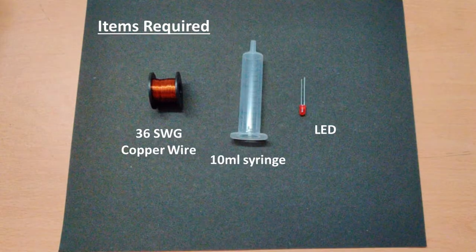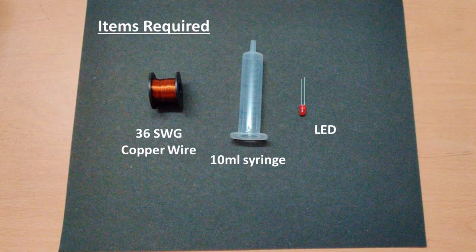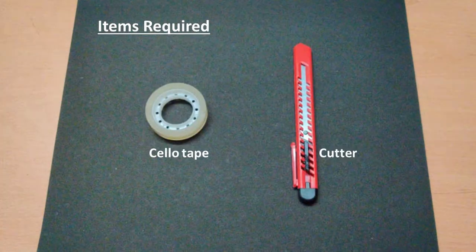If the readymade setup is not available, to build it, you will require a 10 ml syringe, 36 standard wire gauge copper wire, enough to make 400 turns of winding around the syringe, an LED, cello tape and a cutter.